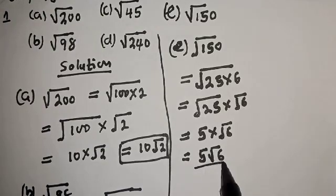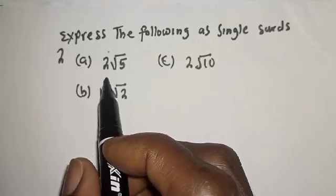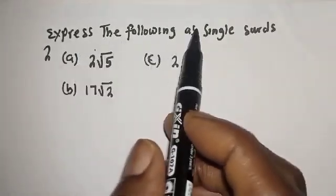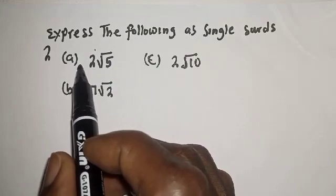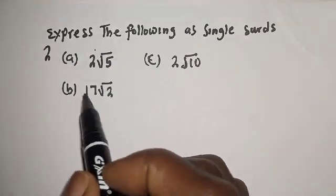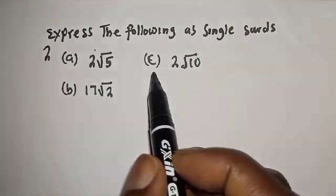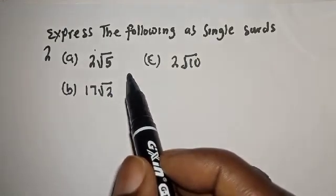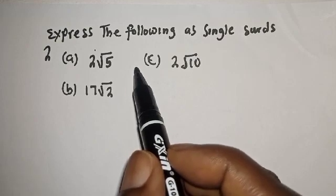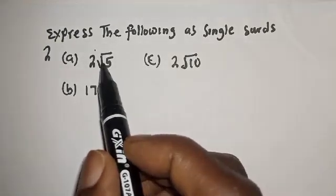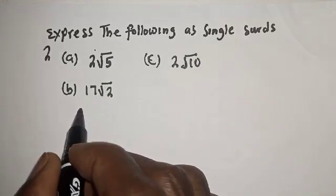Now let us consider another example: express the following as a single surd. (a) 2 root 5, (b) 7 root 2, and (c) 2 root 10. Remember, surds can be simplified in their simplest form or as a single surd. We've considered simplest form — now let's consider the single surd form.